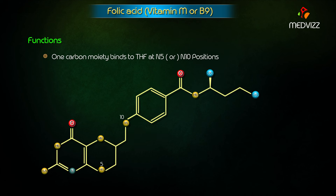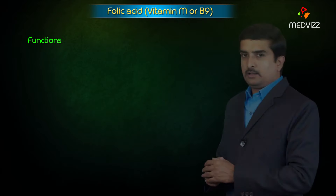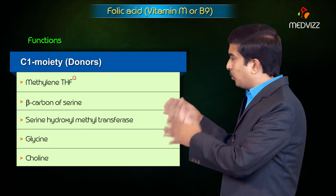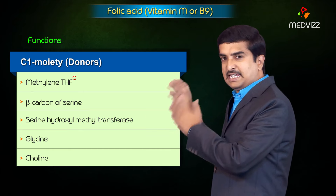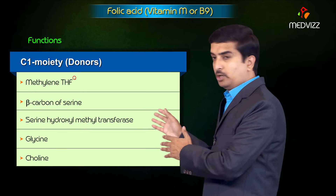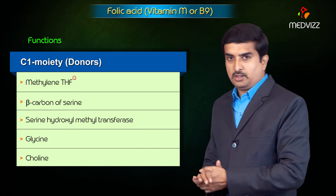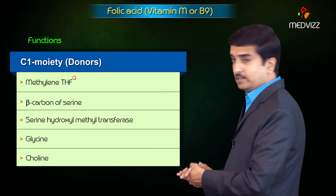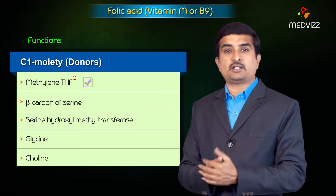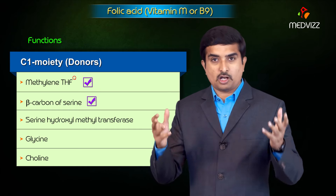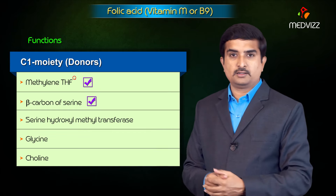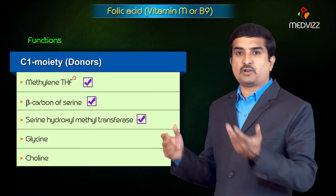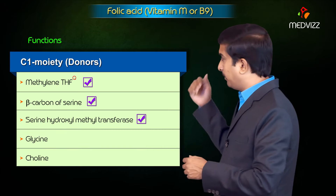At both N5 and N10: methylene or methenyl. The one carbon metabolism C1 moiety donors are as follows: the main donor is methylene tetrahydrofolate, derived from the beta carbon of serine via the enzyme serine hydroxymethyl transferase, which is also involved in the pathways of glycine and choline.